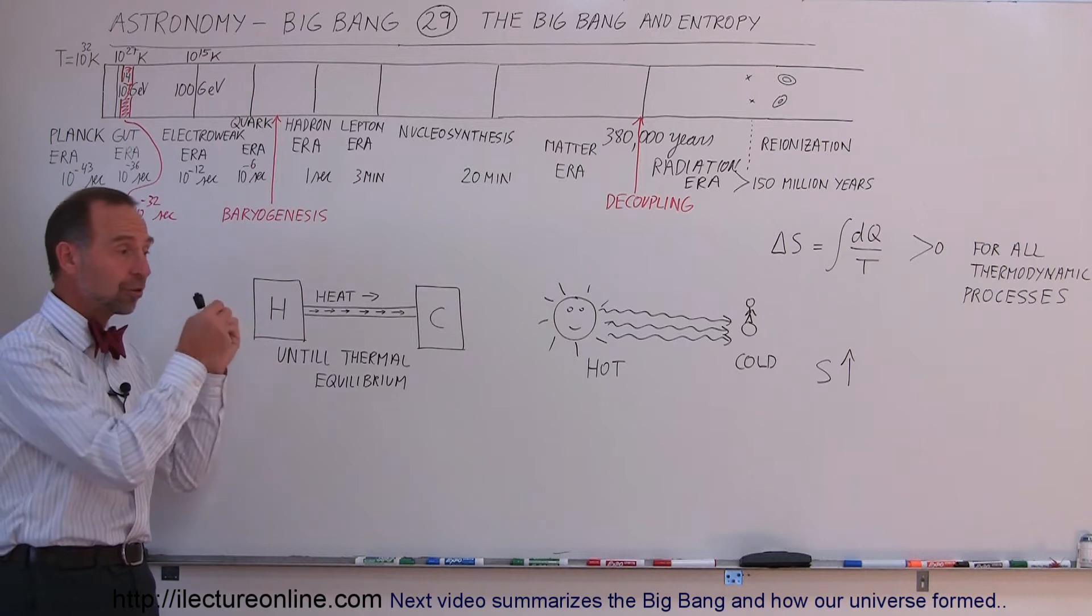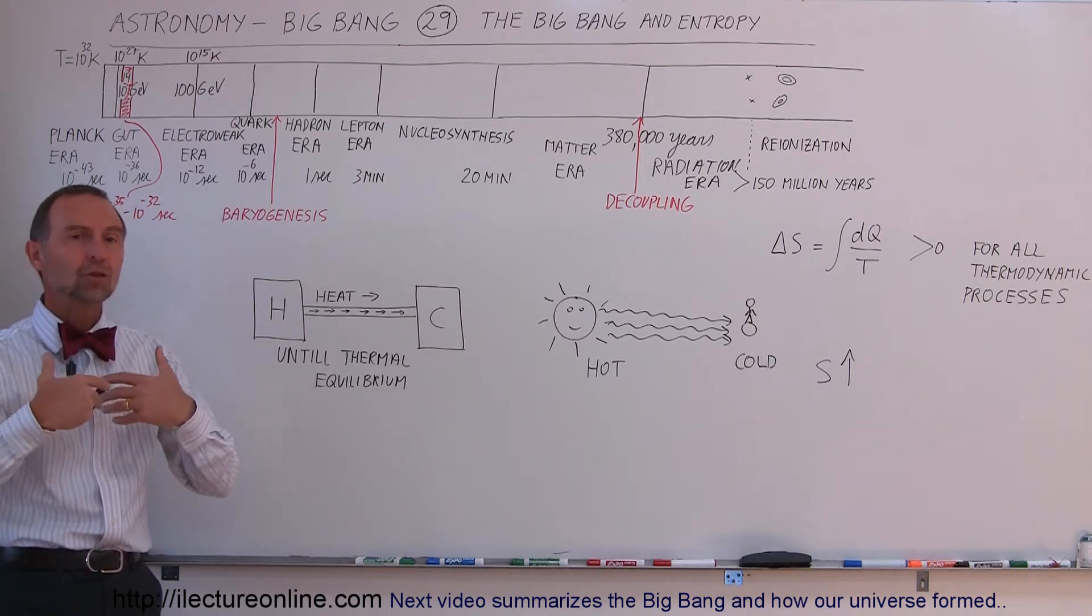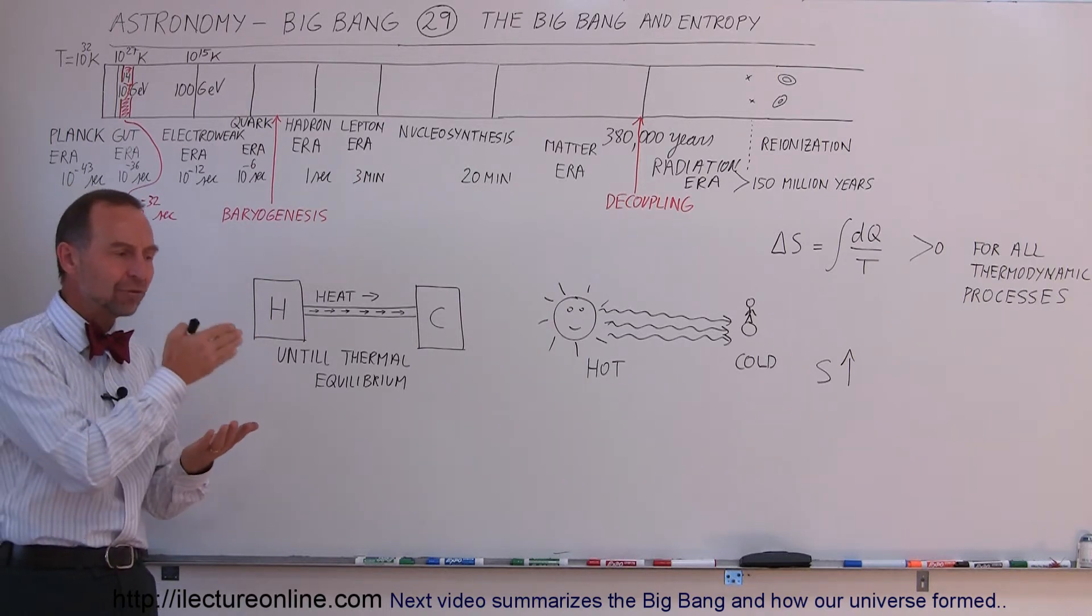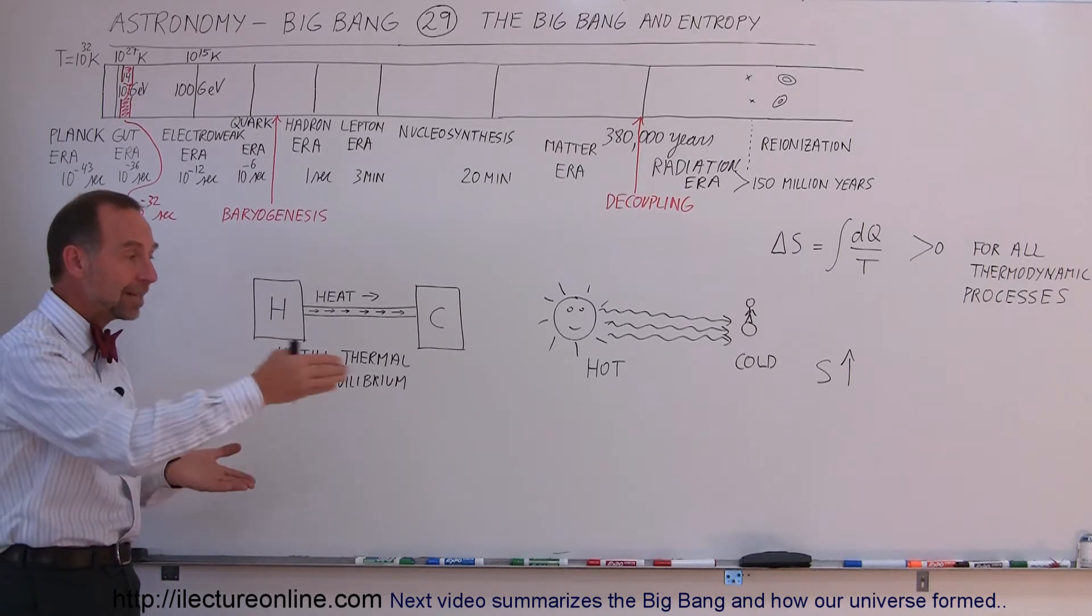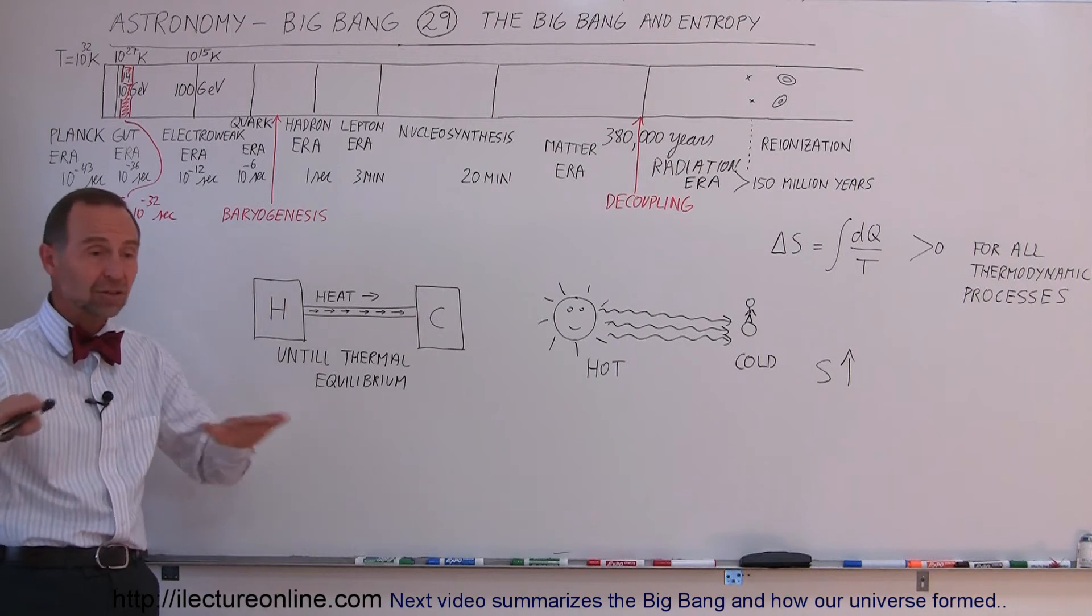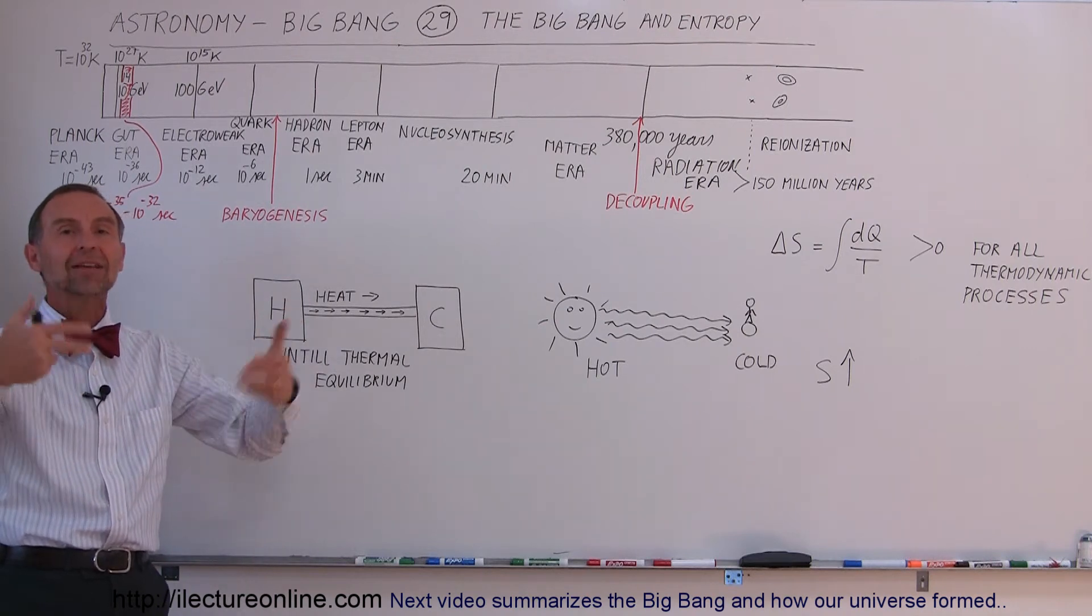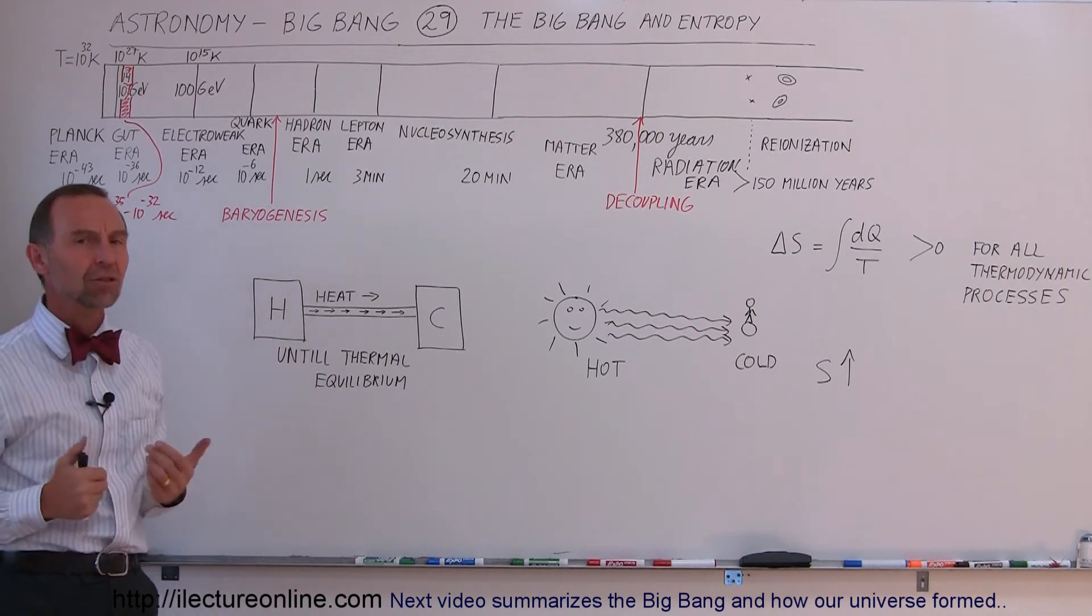And if there are, then heat can flow from the hot to the cold and so therefore that's an ordered state. And when heat flows from hot to cold, that ordered state becomes more disordered and when the heat is then equally divided between the two places so no more heat can be exchanged, that's when you reach your highest disorder and your highest entropy.